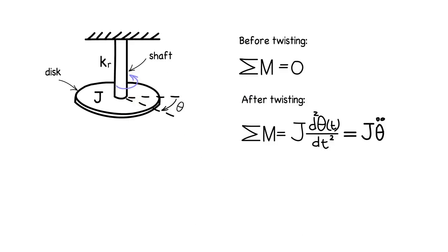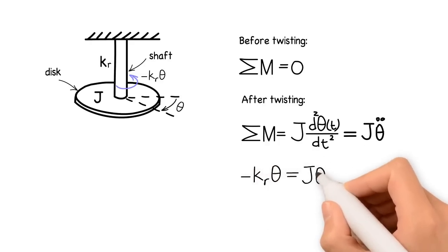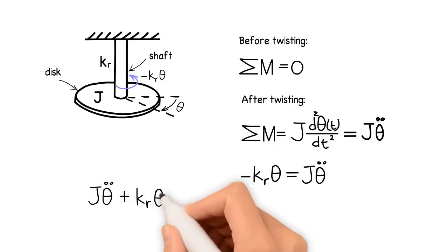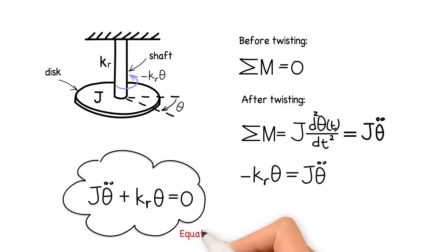So the moment acting on the disc is the reaction moment by the shaft which is minus kr theta. So minus kr theta equals J theta double dot. Arranging the equation, we get J theta double dot plus kr theta equals zero. And this is also a similar equation of motion, but for rotational motion.